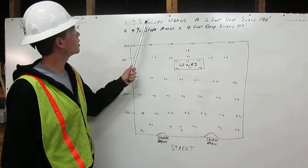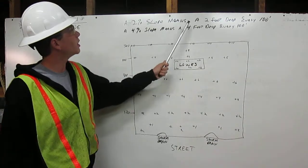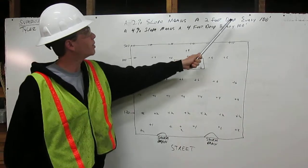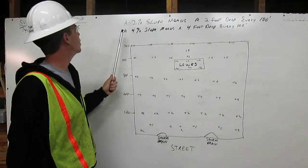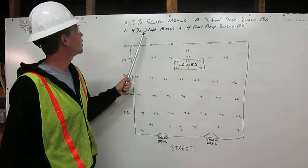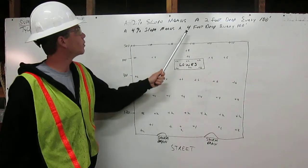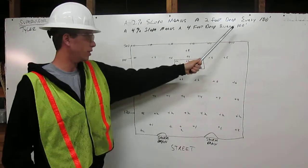A 2% slope means a 2 foot drop every 100 feet. And a 4% slope means a 4 foot drop every 100 feet.